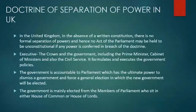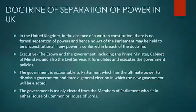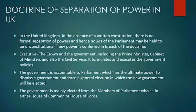The doctrine of separation of powers in the UK: due to the absence of a written constitution, there is no formal separation of powers, and hence no act of parliament may be held unconstitutional if any power is conferred in breach of the doctrine. The executive consists of the Crown and the government, including the prime minister, cabinet of ministers, and civil service. The government is accountable to parliament, which has ultimate power to dismiss a government and force a general election. The government is mainly elected from members of parliament sitting in either the House of Commons or House of Lords.